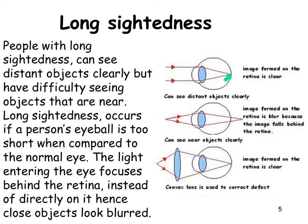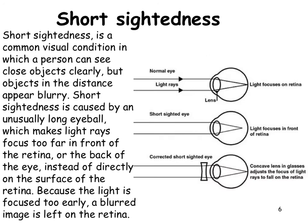In a normal eye, light rays are focused right on the retina. If the eyeball is too short, the light rays focus behind it. To bring them together sooner, we use a convex lens, which pushes those light rays closer together earlier. That is how we correct long-sightedness.